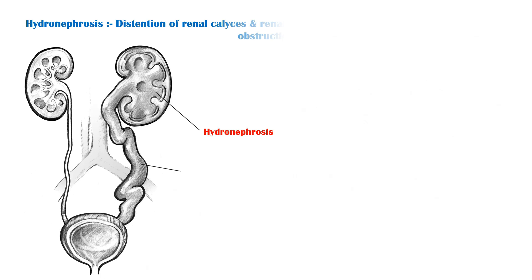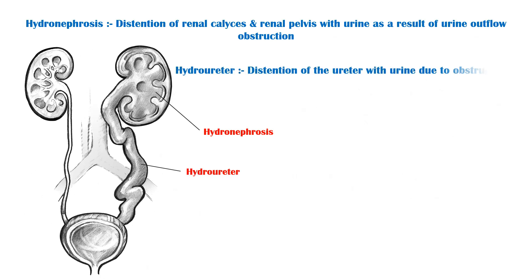Hydronephrosis is defined as distension of renal calyces and pelvis with urine, as a result of urine outflow obstruction. Hydroureter is defined as distension of the ureter with urine due to obstruction.